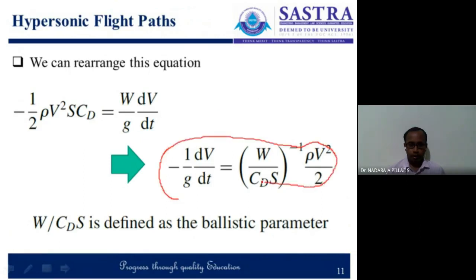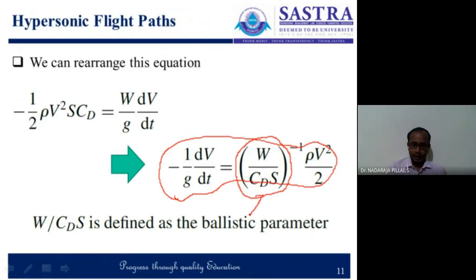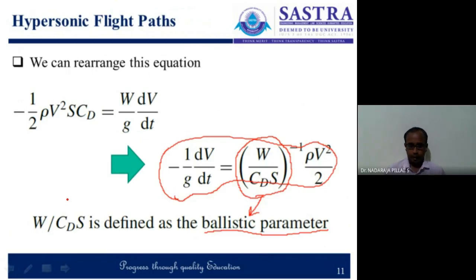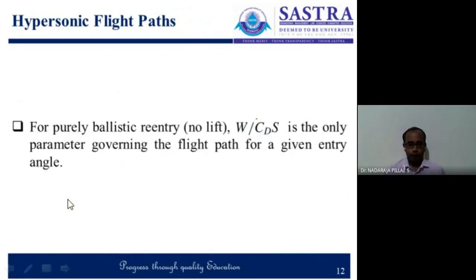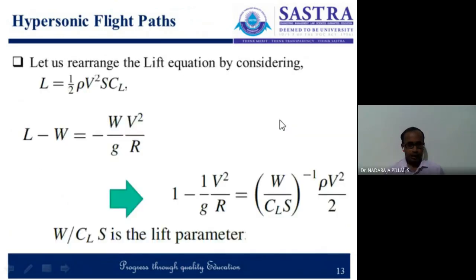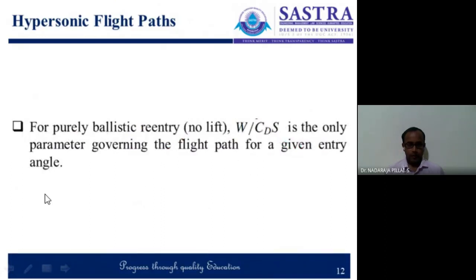This equation has the characteristic term W by C_D S. W by C_D S is called the ballistic parameter. We will see how we use this ballistic parameter and lifting parameter. For a purely ballistic entry, when there is no lift, this W by C_D S becomes a governing parameter — the parameter which governs the flight path.